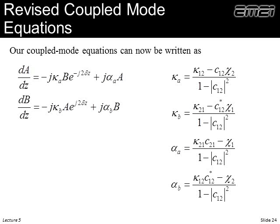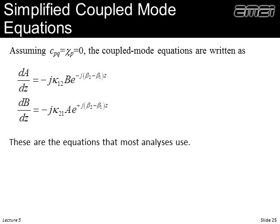After normalization, the coupled mode equations can be written more simply, grouping terms into kappa and alpha. If we assume the propagation constants stay the same and the c term is zero — valid when waveguides are sufficiently separated — the equations reduce to a very clean form. This is the starting point for most coupled mode analyses. They look intuitive, but it's important to understand the assumptions required for them to be fully valid.